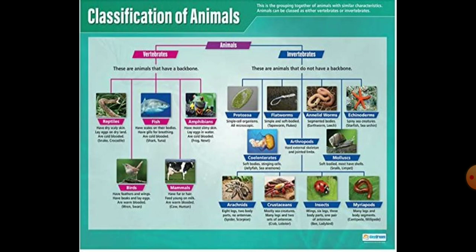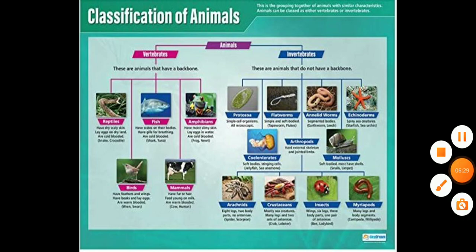That is how animals are classified. In the next class we will study phylum Porifera, that is sponges. In this session we studied the species concept, phylogeny, and the classification of animals. Vertebrates are classified based on the presence of a backbone and notochord, whereas invertebrates do not possess bones and are classified accordingly. Thank you.